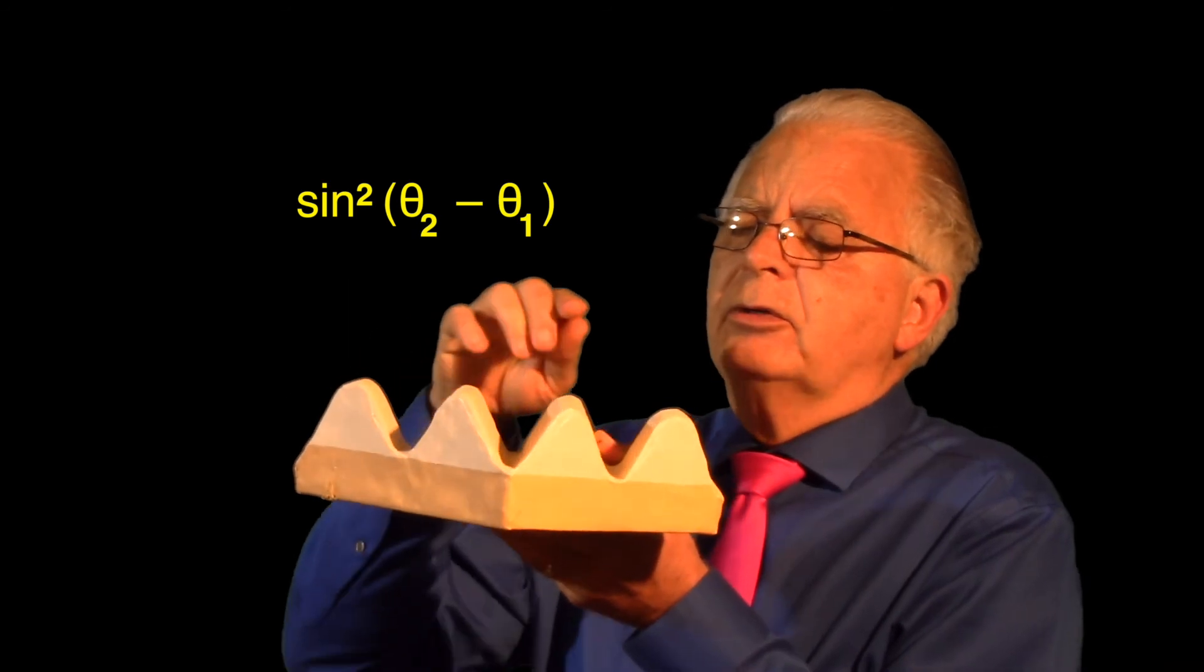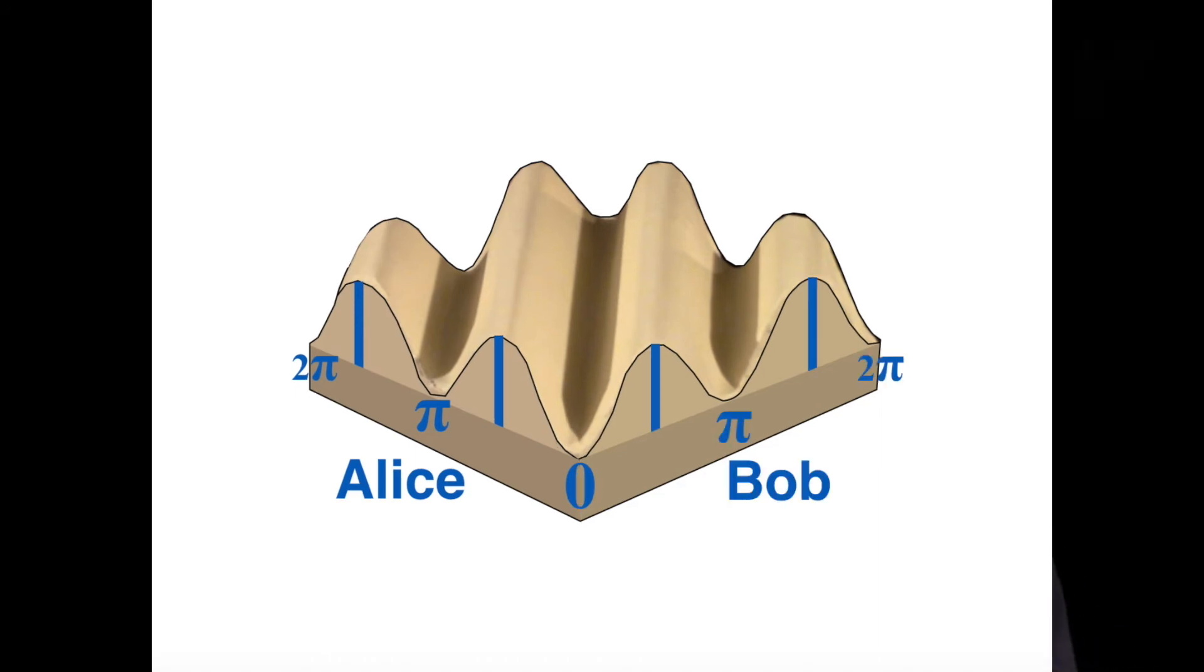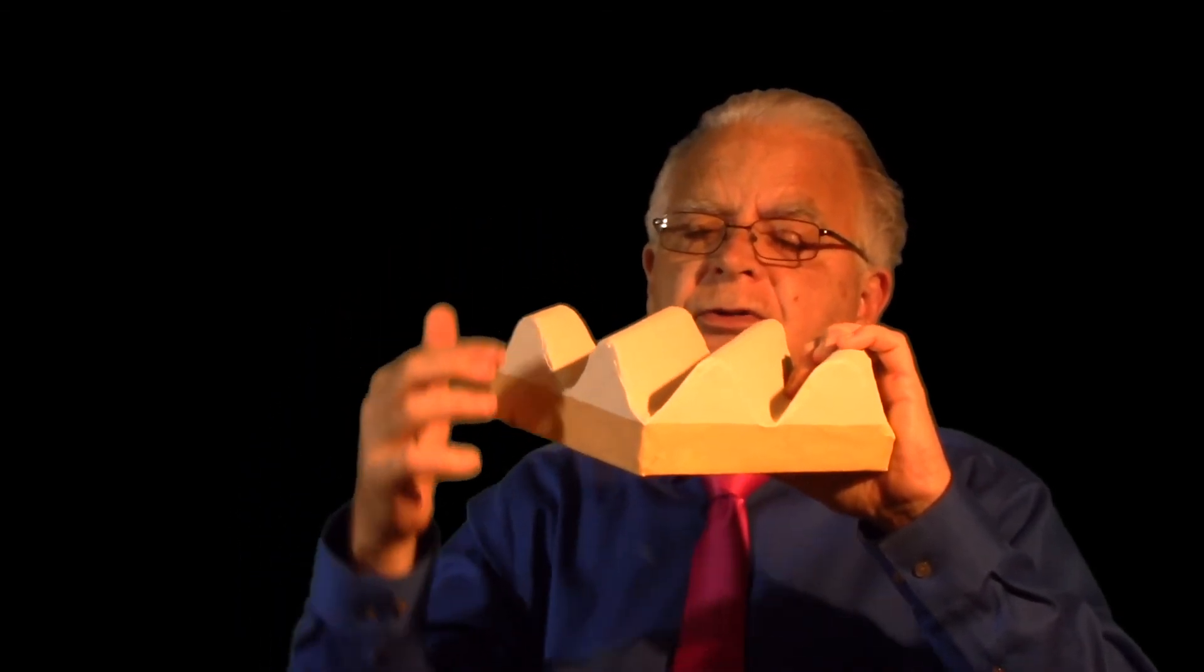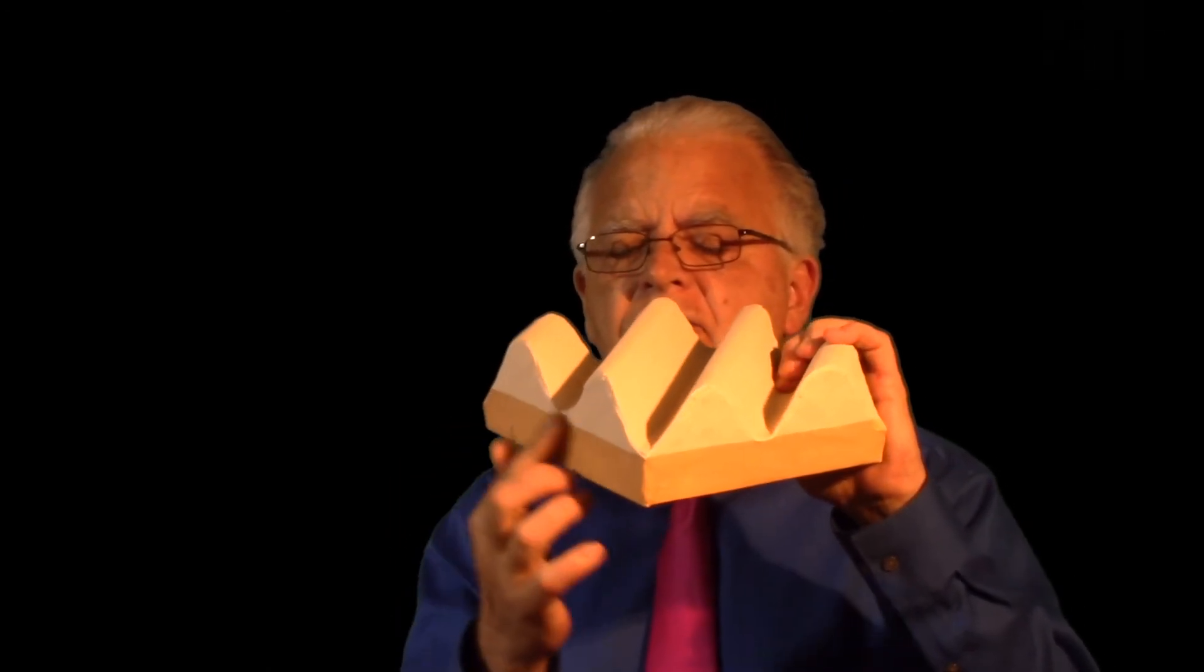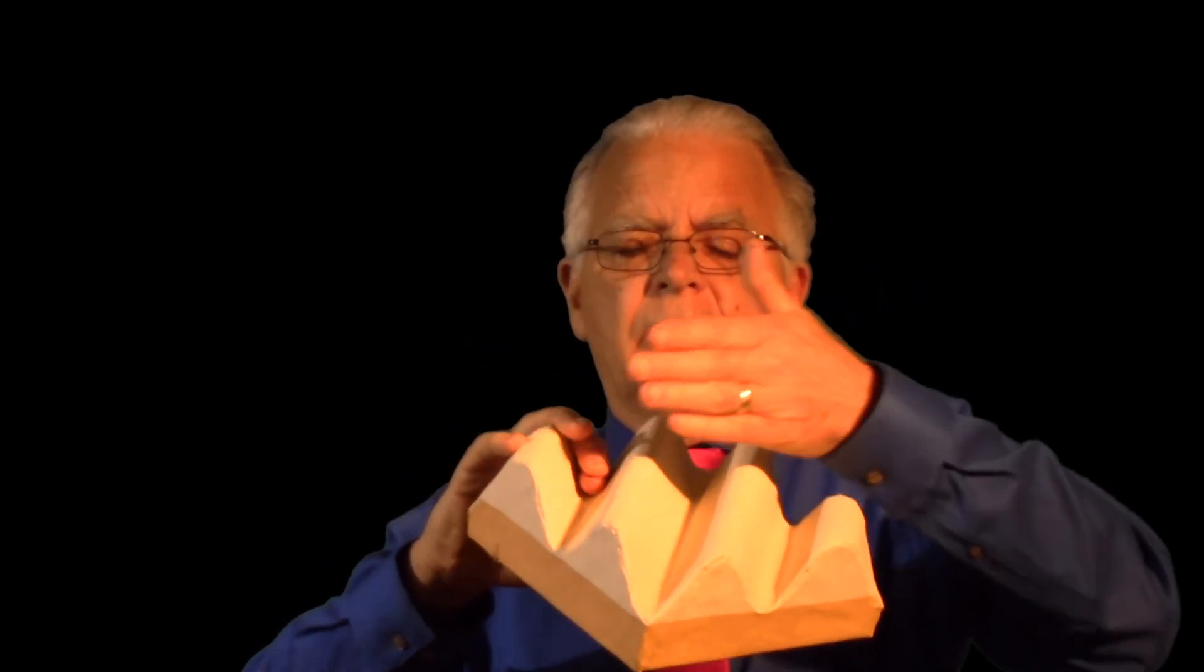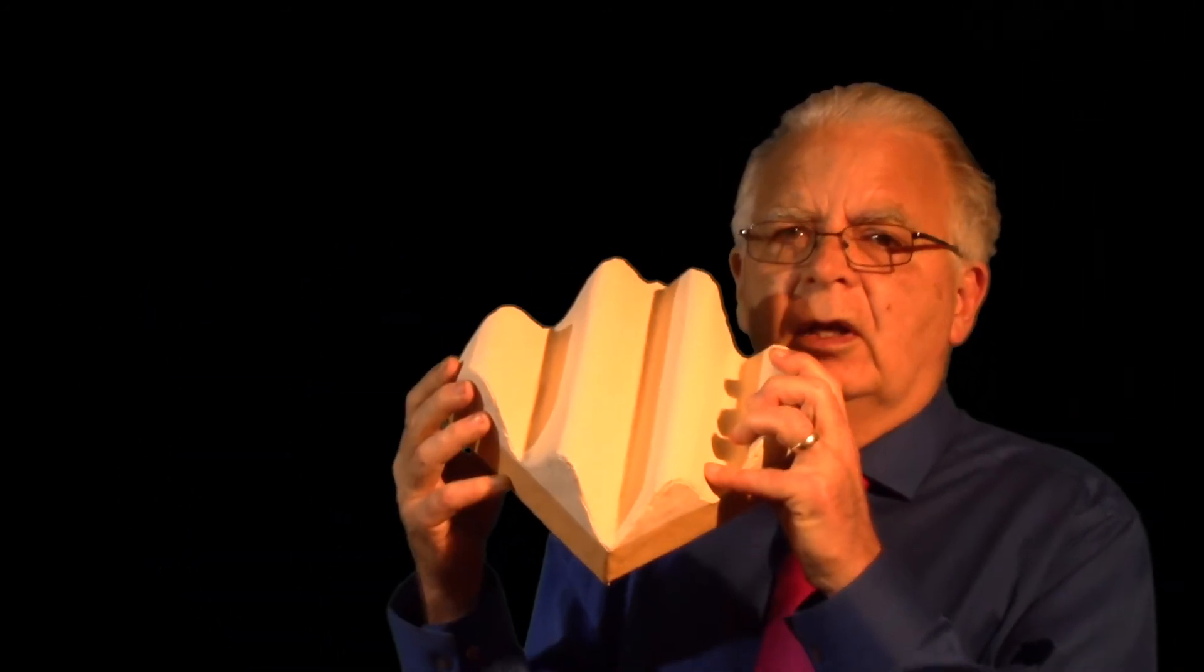This model is a three-dimensional representation of the sine squared theta graph. On this side here, you have Alice's choice of theta one. On this side here, you have Bob's choice of theta two. And the height of the model from this line up to wherever above it there is a point on the curve is the sine squared theta two minus theta one. So Alice can choose any theta one she wants, and then that would be equivalent to cutting through this model and creating the blue wall you see. Bob can choose any theta two he wants, and the resulting probability of them both seeing a photon simultaneously will be determined by the height of the blue wall.